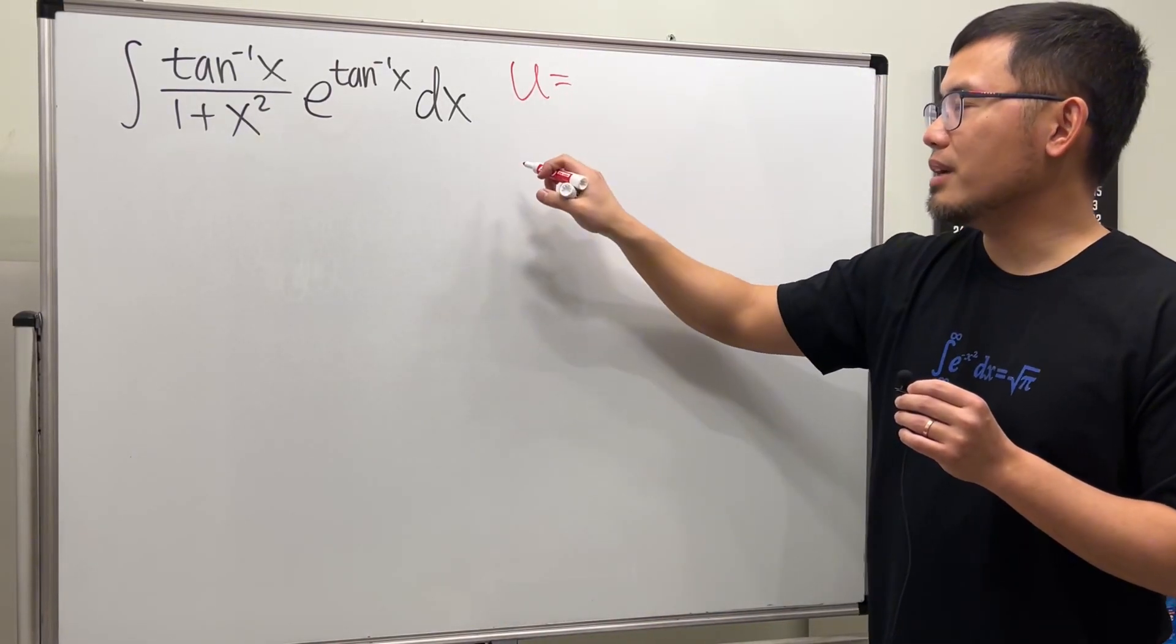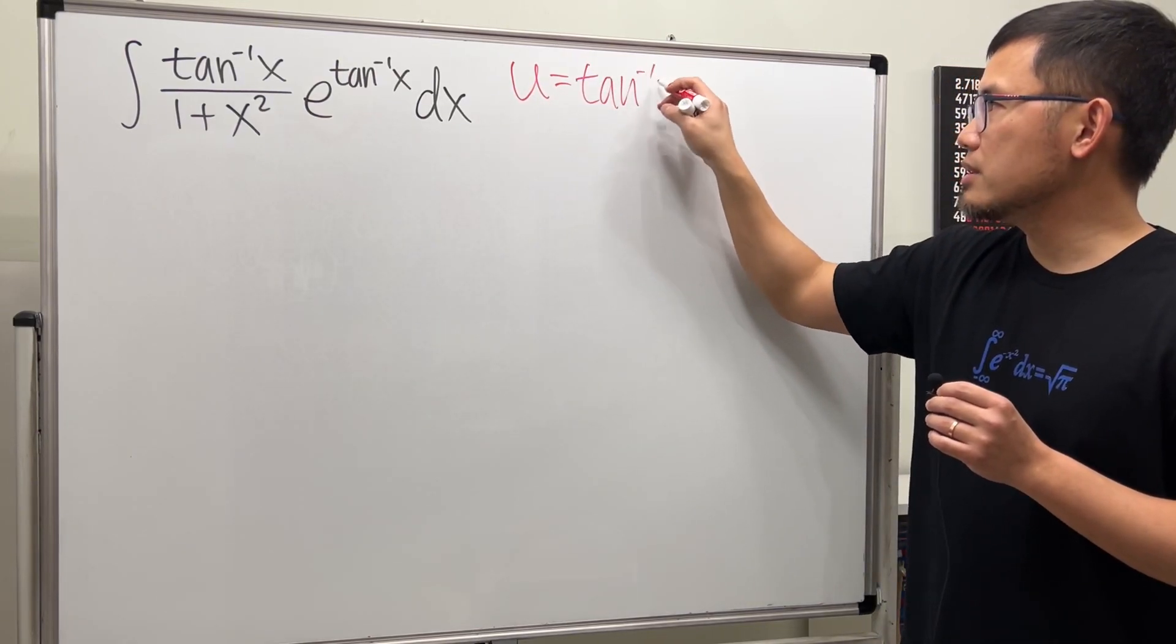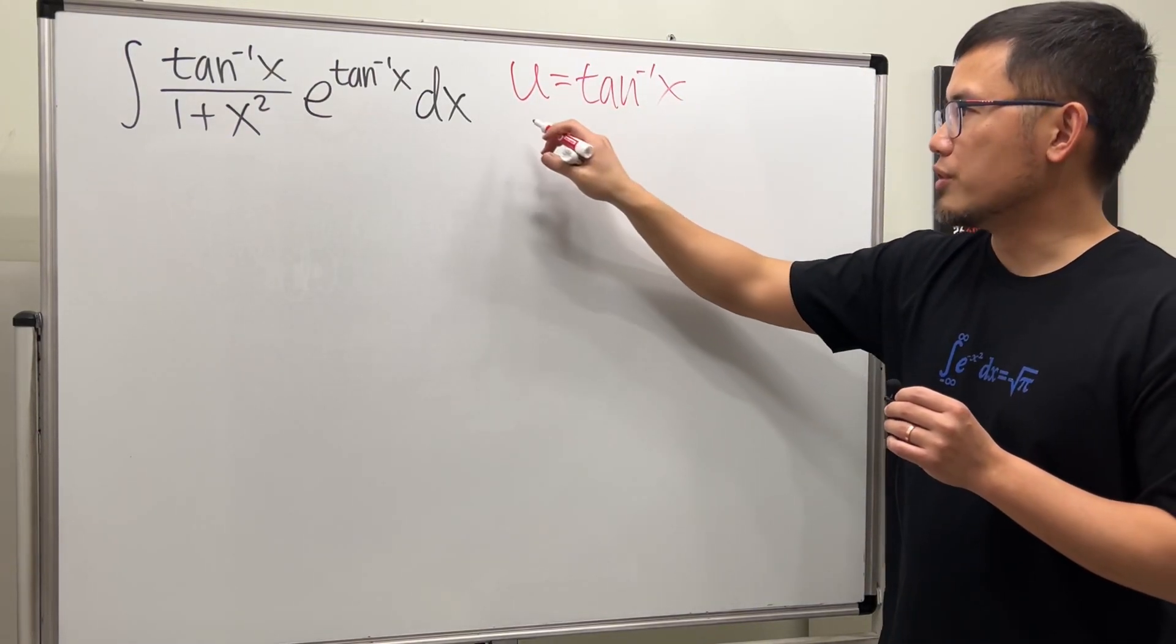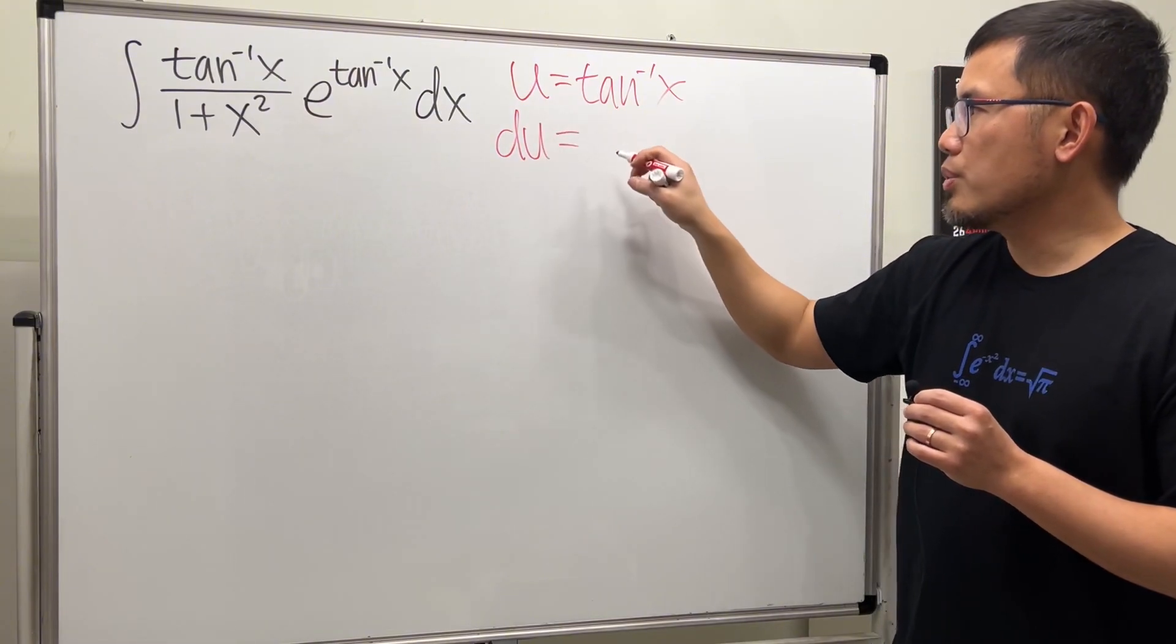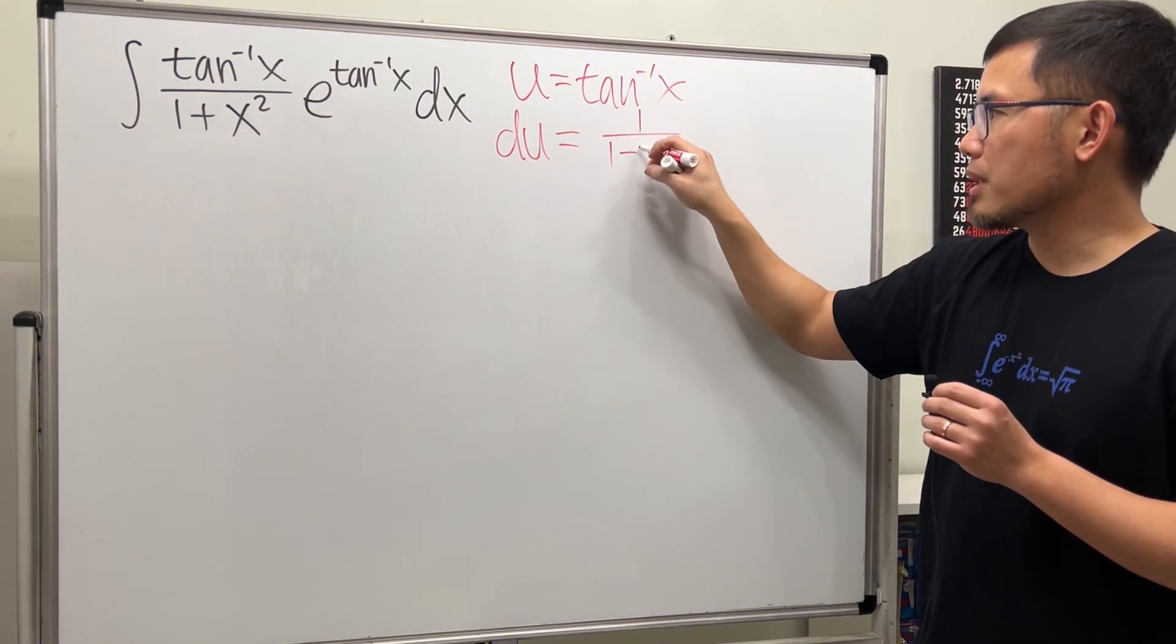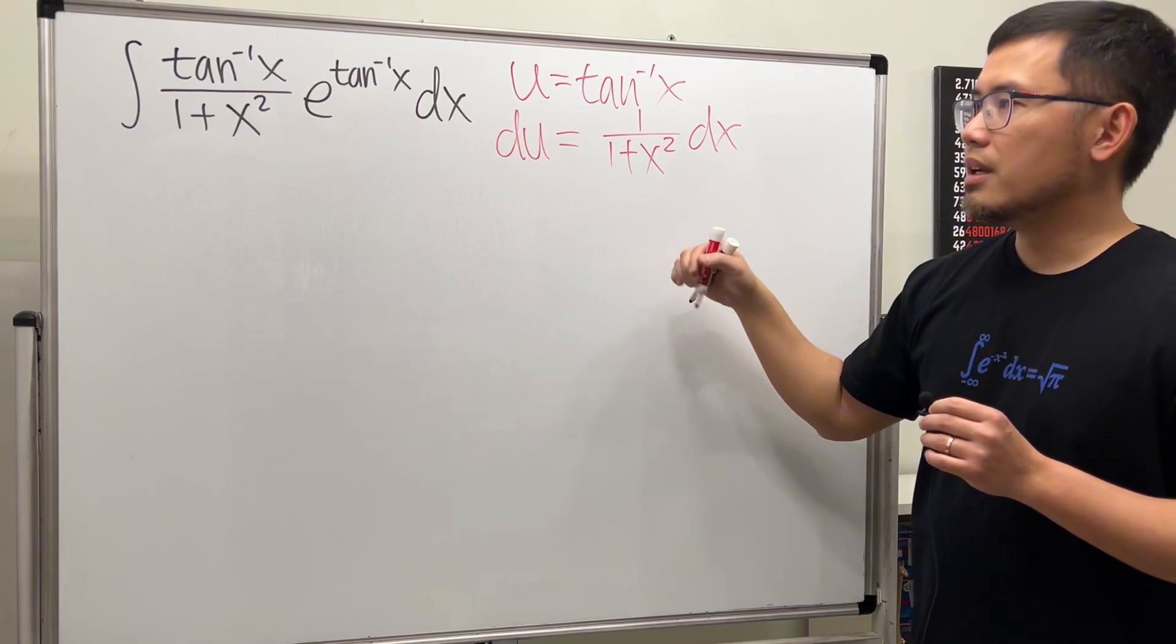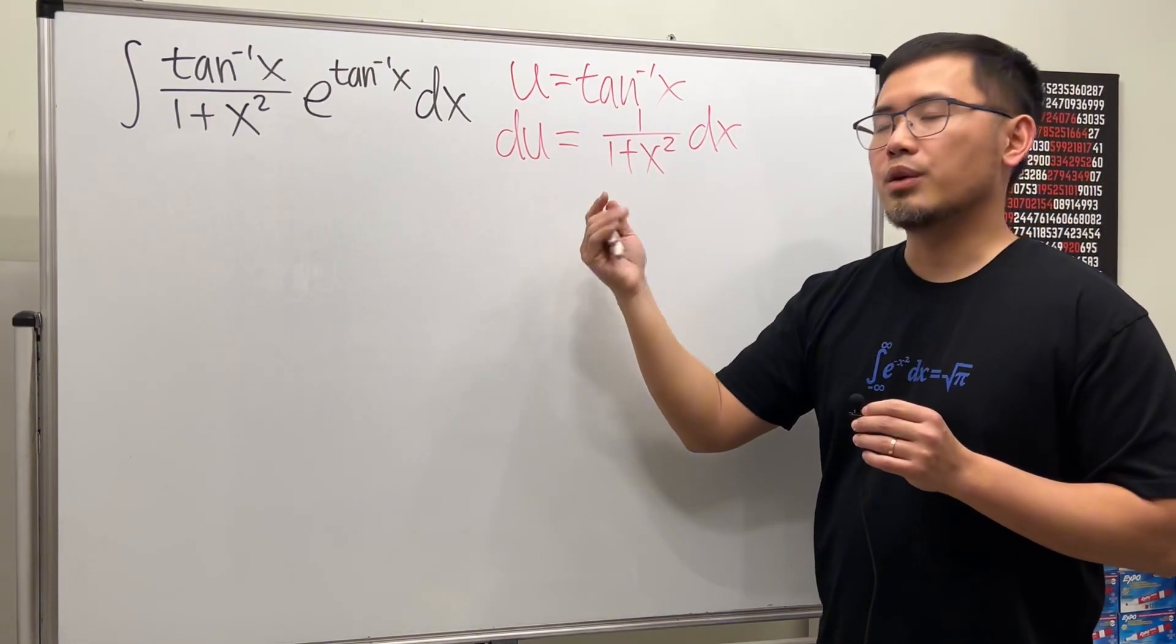We have that on the bottom right here. So this suggests us to just do u substitution right away. Put u equal to inverse tangent of x, take the derivative of both sides, du equals 1 over 1 plus x squared dx.